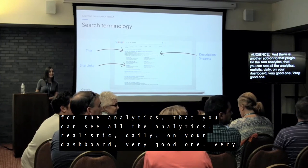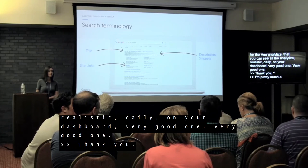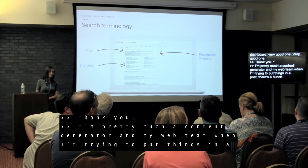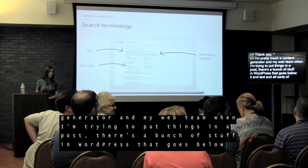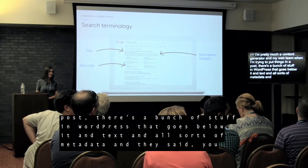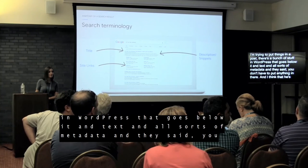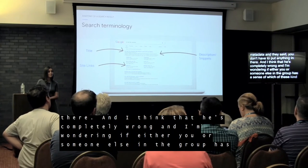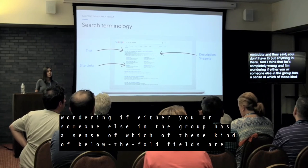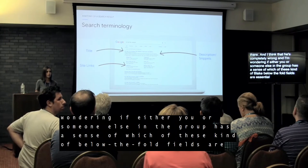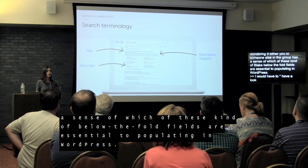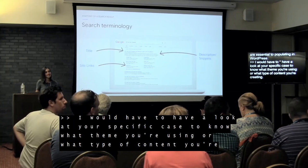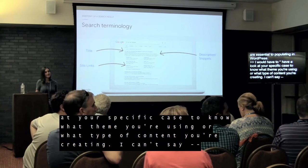Another question: a content generator asks about the fields that appear below posts in WordPress — like alt text and other metadata — which their web team says don't need to be filled in. They're wondering which of these fields are essential to populate. The speaker says she'd need to look at the specific case and content type to advise properly. An audience member suggests Yoast SEO — spelled Y-O-S-T — or 'All in One SEO' as plugins that can help with this.